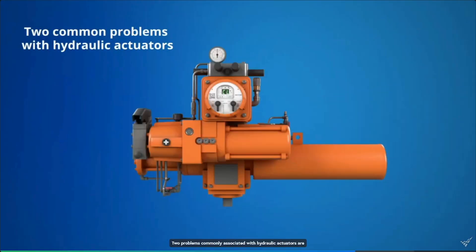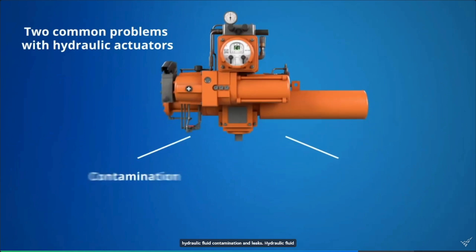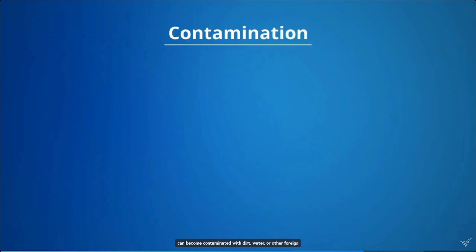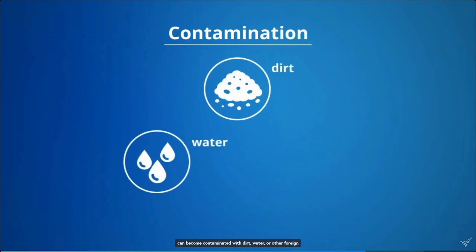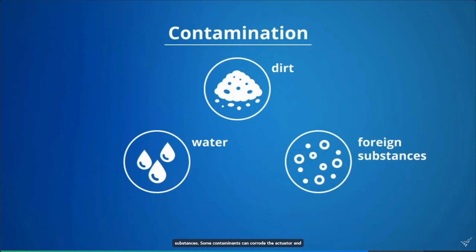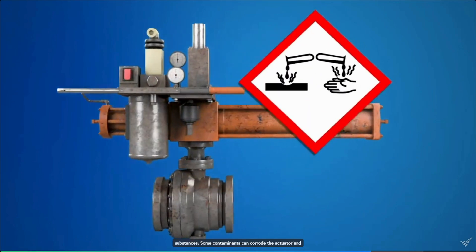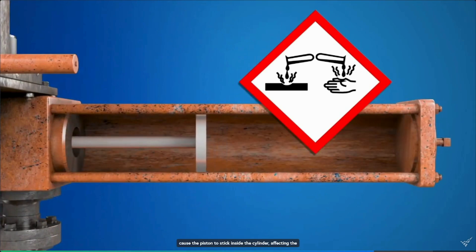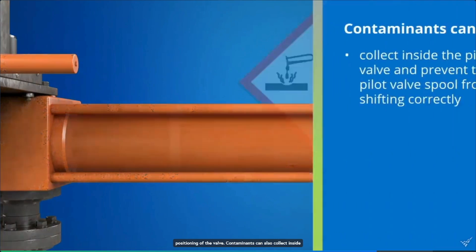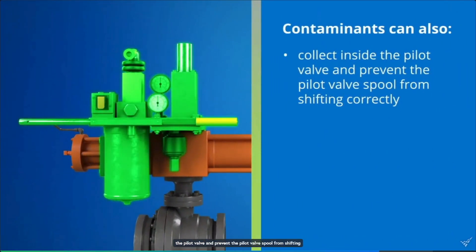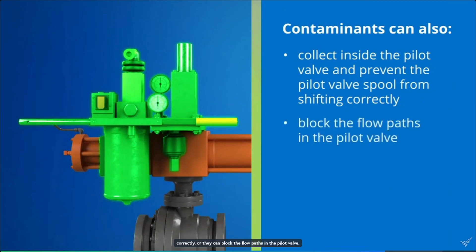Two problems commonly associated with hydraulic actuators are hydraulic fluid contamination and leaks. Hydraulic fluid can become contaminated with dirt, water, or other foreign substances. Some contaminants can corrode the actuator and cause the piston to stick inside the cylinder, affecting the positioning of the valve. Contaminants can also collect inside the pilot valve and prevent the pilot valve spool from shifting correctly, or they can block the flow paths in the pilot valve. In either case, the pilot valve would not operate correctly and the actuator would be unable to position the valve correctly.